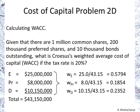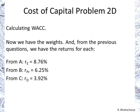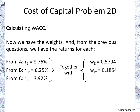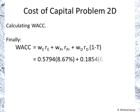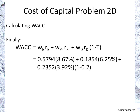Now we can proceed to calculate the overall weighted average cost of capital. We have the weights, and from the previous questions we have the rates of return for equity, preferred shares, and debt. We combine them with the weights as well as the tax rate of 20%, plugging everything into the WACC equation. Remember that for debt we include the (1 - t) term, and that gives us a result of 6.918%, or approximately 6.92%.